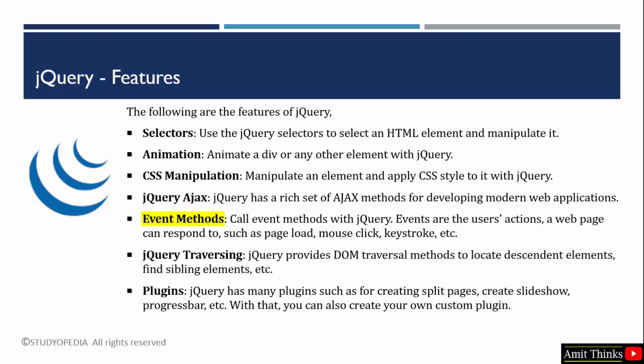jQuery also includes event methods like blur, change, click, double click, and focus. Events are basically user actions — for example, opening a web page, pressing a button, loading a page, clicking a link with the mouse, or any keystroke from your keyboard. All these come under events. jQuery has provided built-in event methods to ease your work. For instance, the jQuery click method is used to trigger an event on the click of an element. We will work on all these methods later in the upcoming lessons.